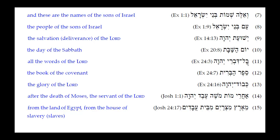Number eleven: Kol Divrei Adonai. The Kamets Hatuph under Kol is telling us it is in construct. The Seri Yod on Divrei tells us it is masculine plural construct. Adonai must be the absolute noun. Translation: 'all the words of the Lord.' The reason for the reduction is that with the Maqqef attached to Divrei, the accent shifts and the Holem that would normally be above the Kaf reduces to a Kamets Hatuph.